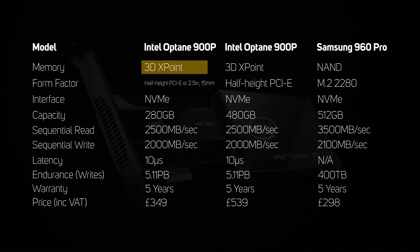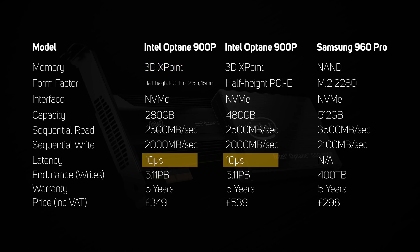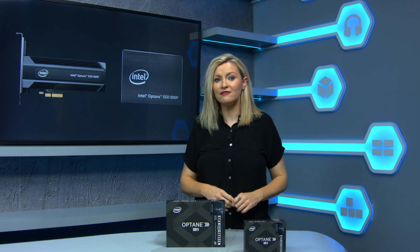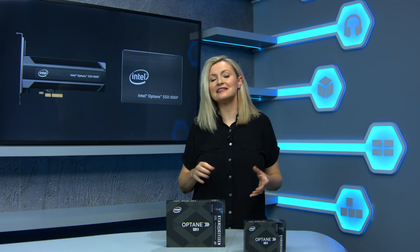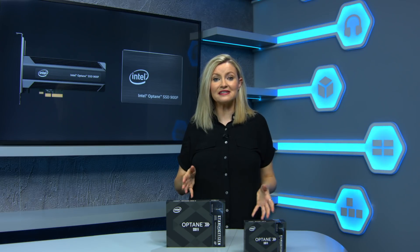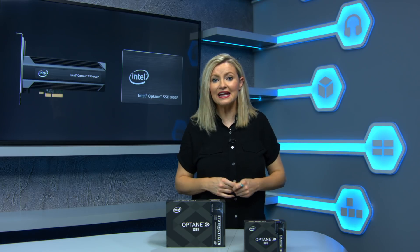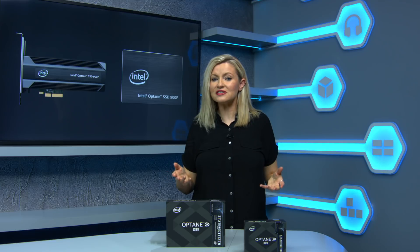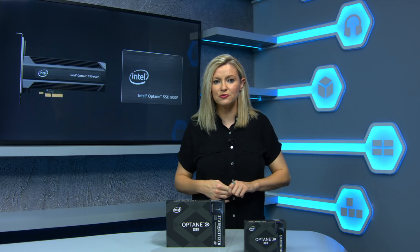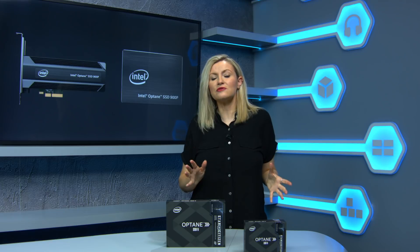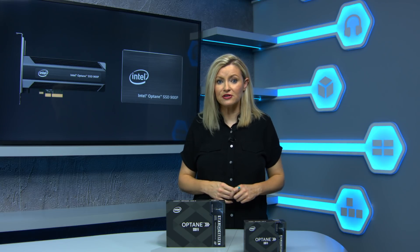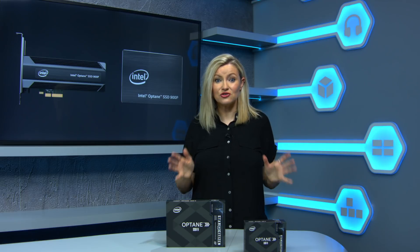One of the key selling points of 3D Crosspoint is its lower latency than NAND, and Intel's claim of 10 microseconds is pretty gobsmacking. Unfortunately, Samsung doesn't publish latency numbers for the 960 Pro, but to put the 900p's 10 microseconds into context, Intel's own fastest NVMe NAND drive, the 750, has a latency of 20 microseconds, whilst one of its fastest SATA NAND drives, the 525, has a latency of 80 microseconds — both significantly slower than the 900p. What's more, NAND SSDs also suffer from additional latency as writes are buffered, whereas the 900p starts writing data straight away.